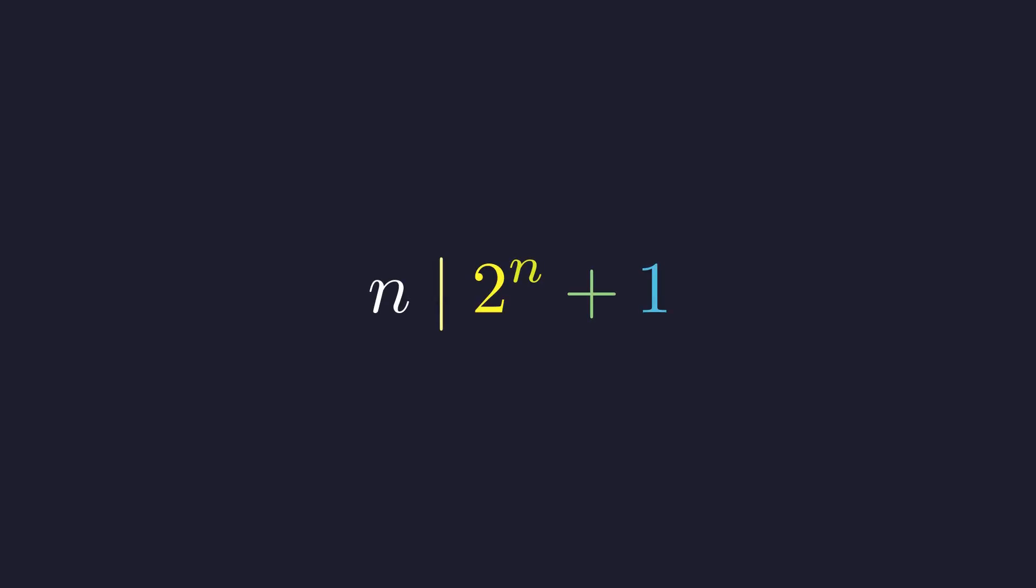Here's a captivating problem that will take us on an elegant journey through number theory. We need to find all positive integers n such that n divides 2 to the power n plus 1. This innocent-looking equation hides a beautiful and surprising structure.